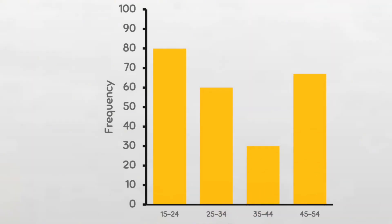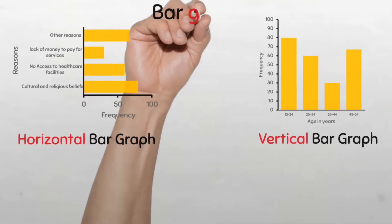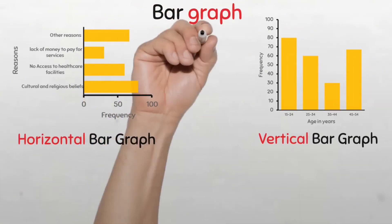We can see here that irrespective of the frequency, each group must be arranged in the correct order from the smallest age group to the largest age group, and from left to right.